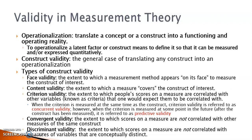Under the big umbrella of construct validity, different types of validity have been defined. Let's start with face validity, which is about the extent to which a measurement method appears on its face to measure the construct of interest. For example, if a teacher told students that they were going to take a test on reading comprehension, but many questions on the test were about math and calculation, face validity was not established.